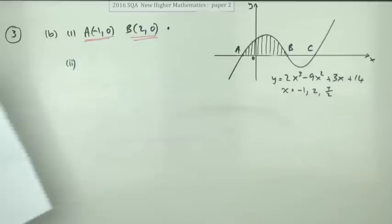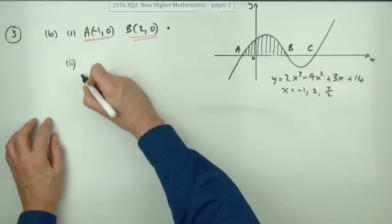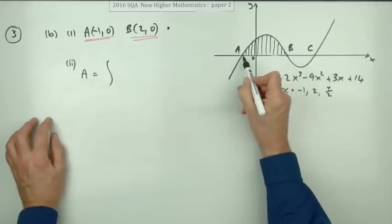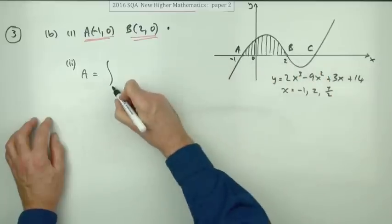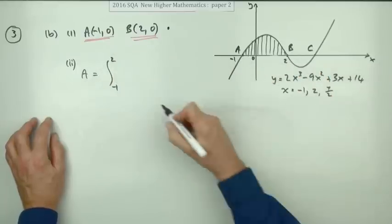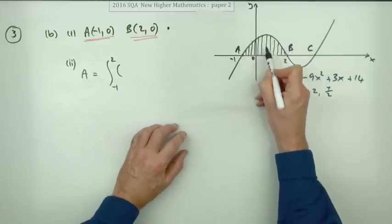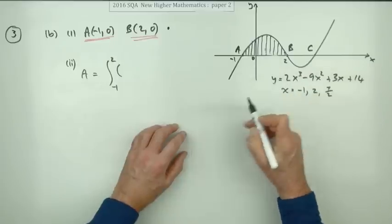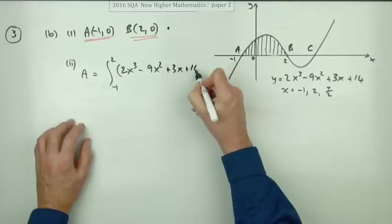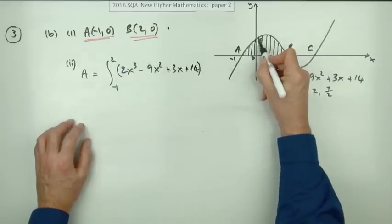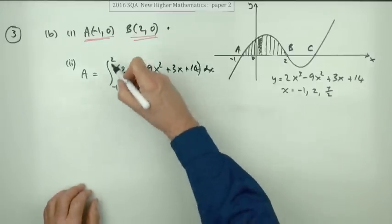Hence calculate the shaded area. The shaded area is completely above the x-axis so it will be positive. The area will be the definite integral from A's x-coordinate to B's x-coordinate — that is, from negative one to two — of the expression 2x³ minus 9x² plus 3x plus 14. The heights of the little rectangles making up this area are given by the y-values, and the widths are dx.